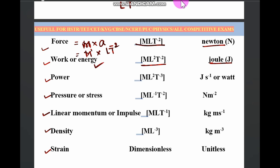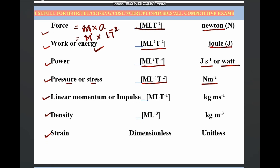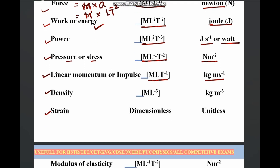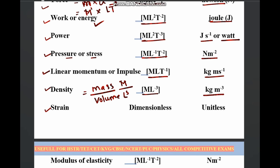Similarly, for work: M L² T⁻², measured in joules. Power: M L² T⁻³, unit is joules per second or watt. Pressure or stress — both have the same dimensional formula: M L⁻¹ T⁻², which is newton per meter squared. Linear momentum or impulse: M L T⁻¹, which is kg·m/s. Density is mass per unit volume — mass is M and volume is L³ — so density is M L⁻³, which is kg per meter cubed. Strain is dimensionless and hence unitless.